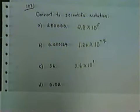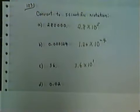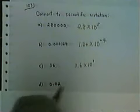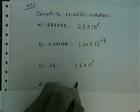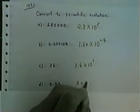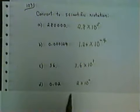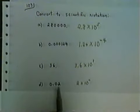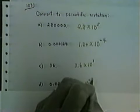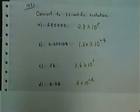Two hundredths is a small number — it's less than 1. That means the exponent would be negative, so it would be 2 times 10 to some negative power. In order to get from 0.02 to 2, I had to shift my decimal two places, so the exponent would be negative 2.